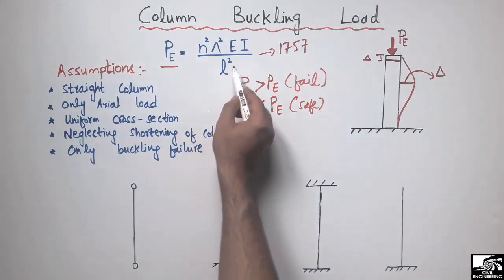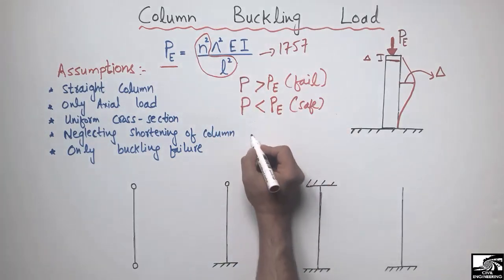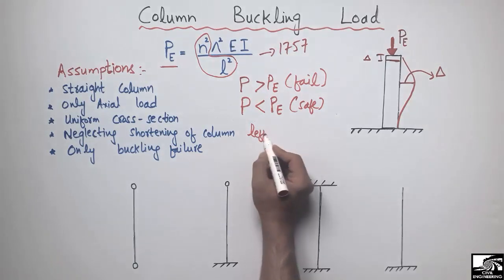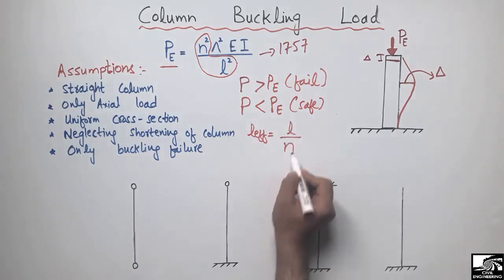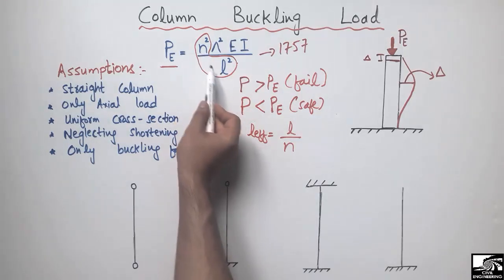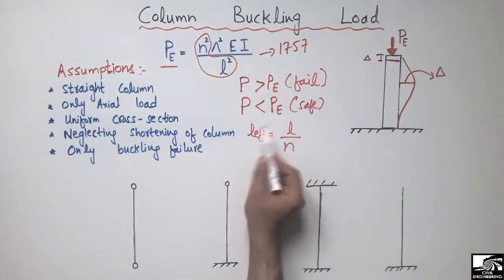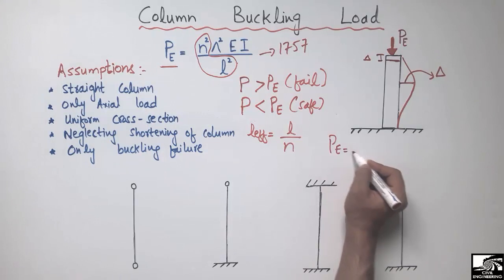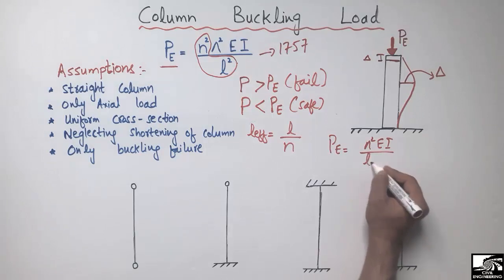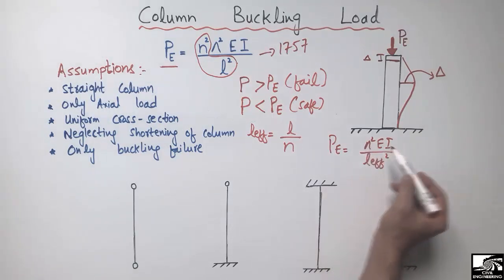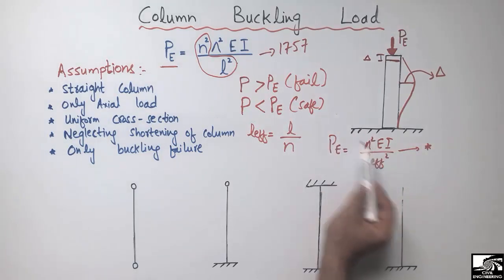In the formula, we can replace the factor N squared by L with another factor called L-effective, where L-effective equals L divided by N. Substituting this into the equation gives: P_E (Euler buckling load) = π²EI divided by L-effective squared. This simplified form can also be used for calculating the Euler buckling load.